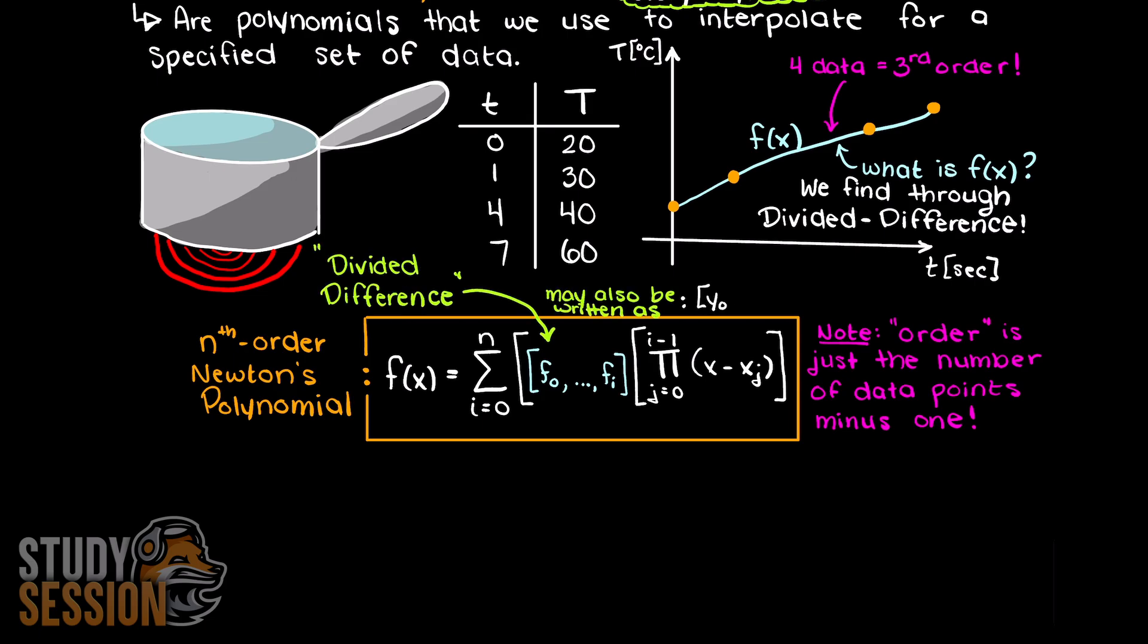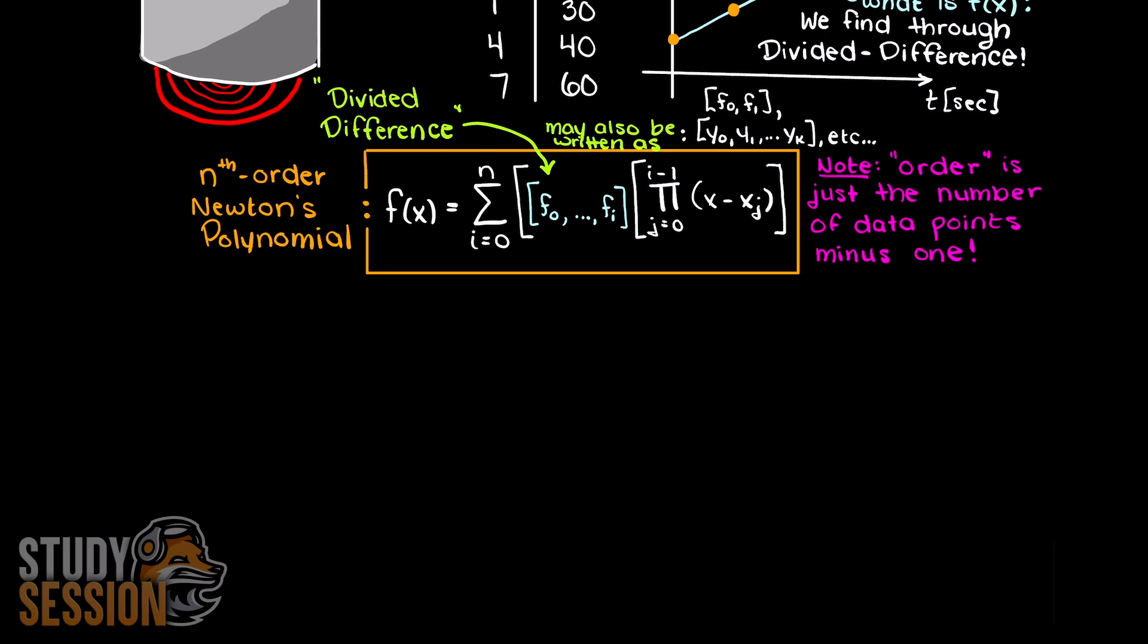These coefficients can be written in many following ways. However, they all mean the same thing, and they are called our divided differences, hence the name. I'm just going to take a second and write out the general first order Newton's polynomial here.